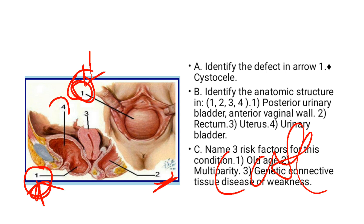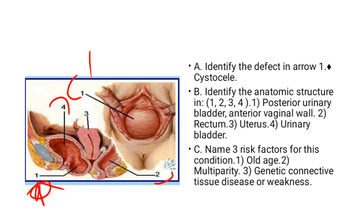Name 3 risk factors for this condition. Of course: old age, multiparity, genetic connective tissue weaknesses. So that's the picture showing.